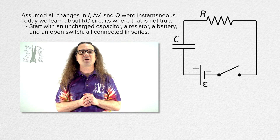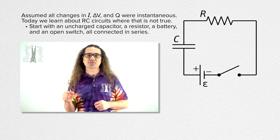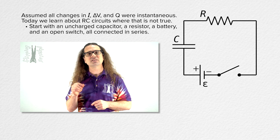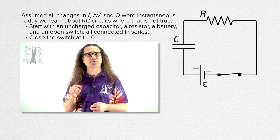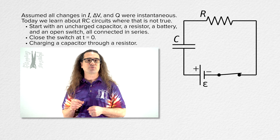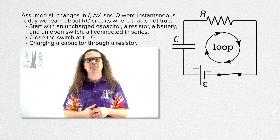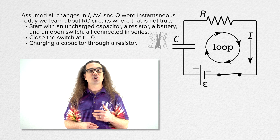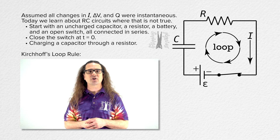We start with a circuit composed of an uncharged capacitor, a resistor, a battery, and an open switch, all connected in series. At time initial, or time equals zero, we close the switch. This is called charging a capacitor through a resistor. Let's start by adding a loop in the direction of current flow in the circuit, which is clockwise. Then let's use Kirchhoff's loop rule starting in the lower right-hand corner of the circuit.